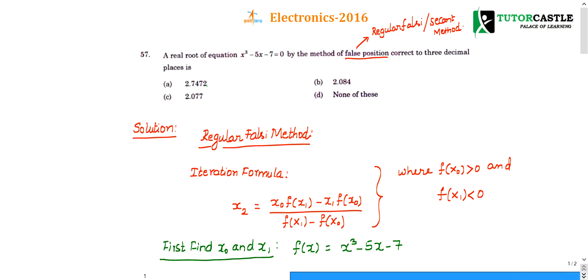Question number 57. A real root of equation x cubed minus 5x minus 7 equal to 0 by method of false position correct to three decimal places. So the question is based on false position method. The other names for false position method are regular falsie method or secant method.